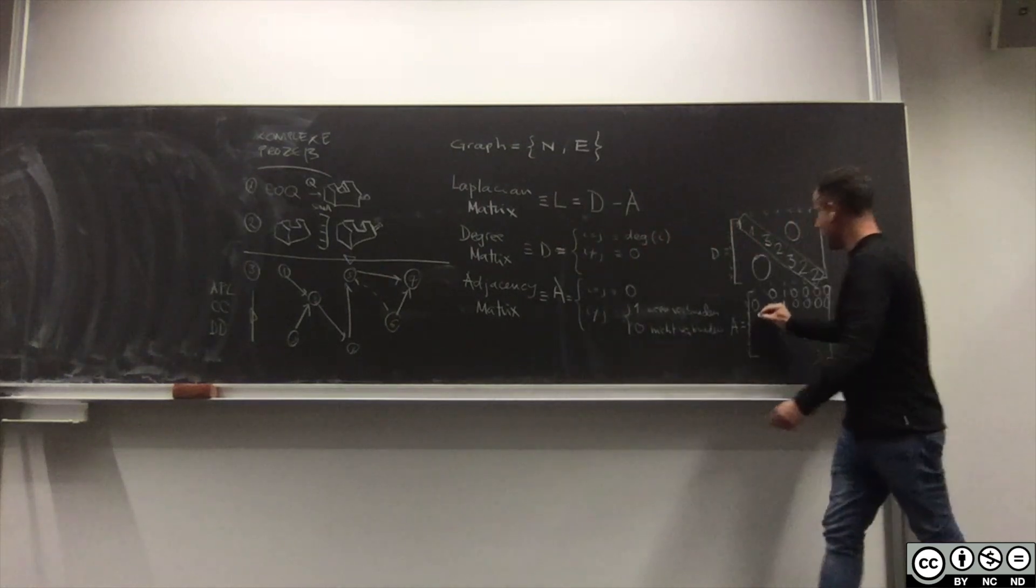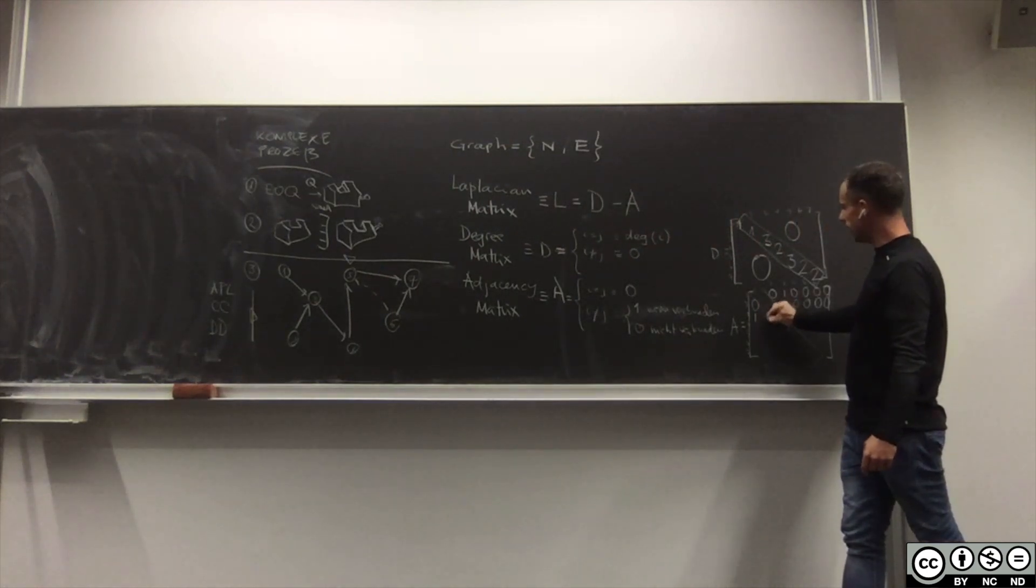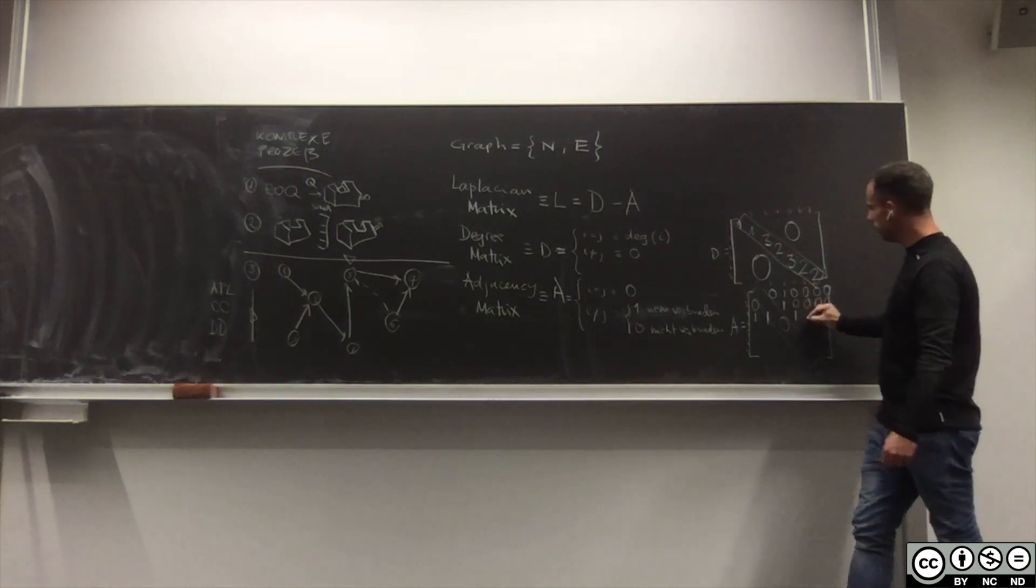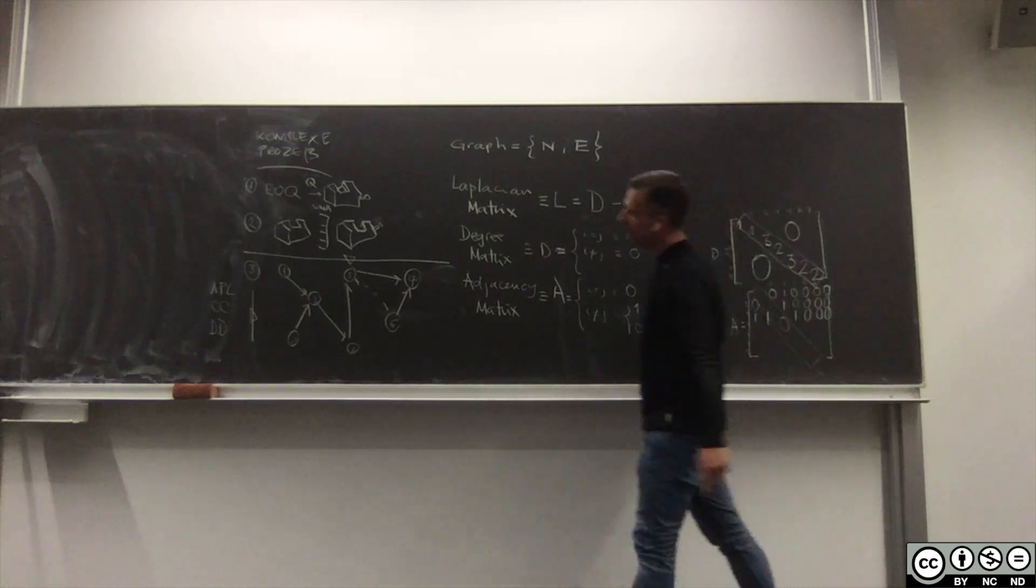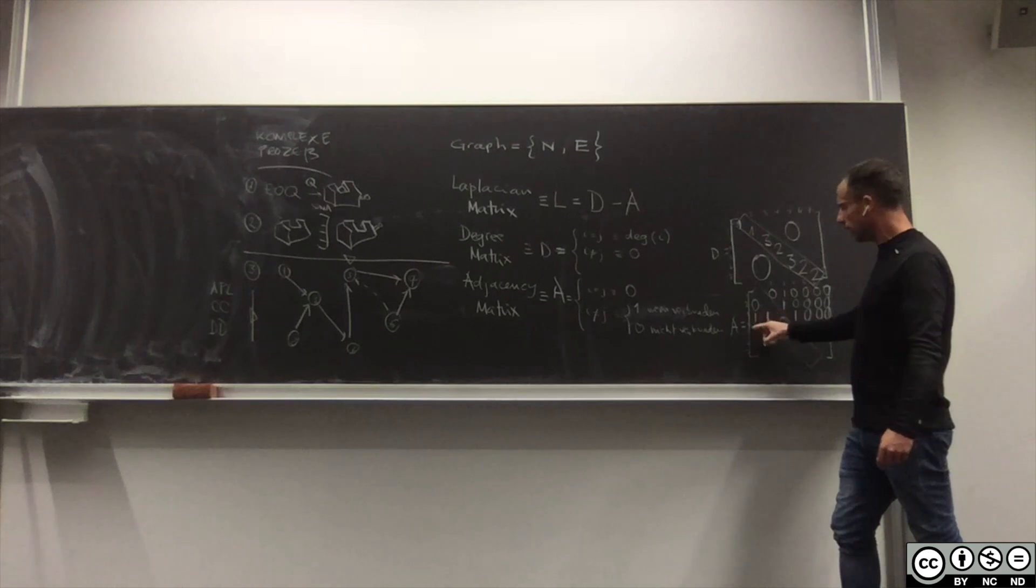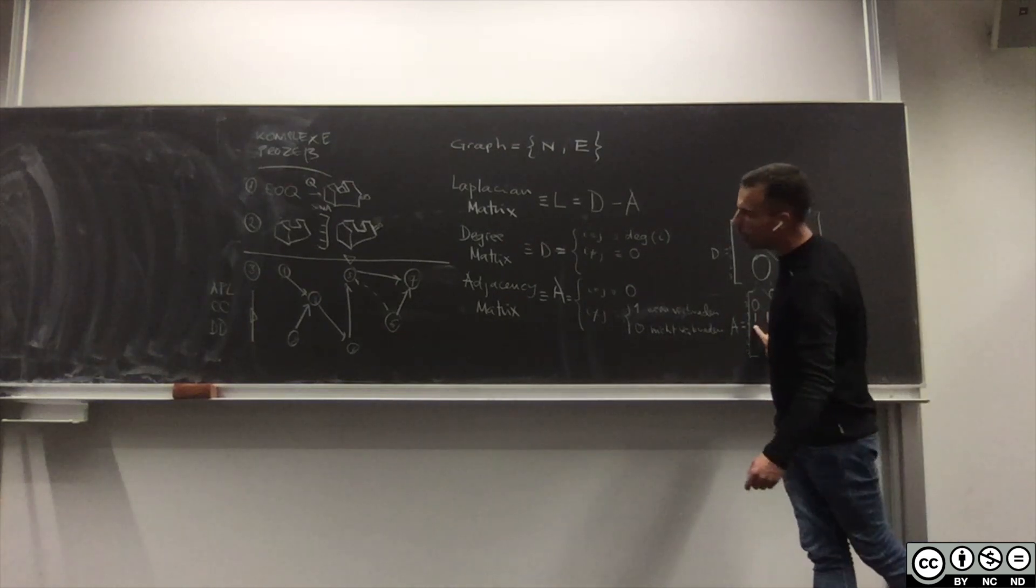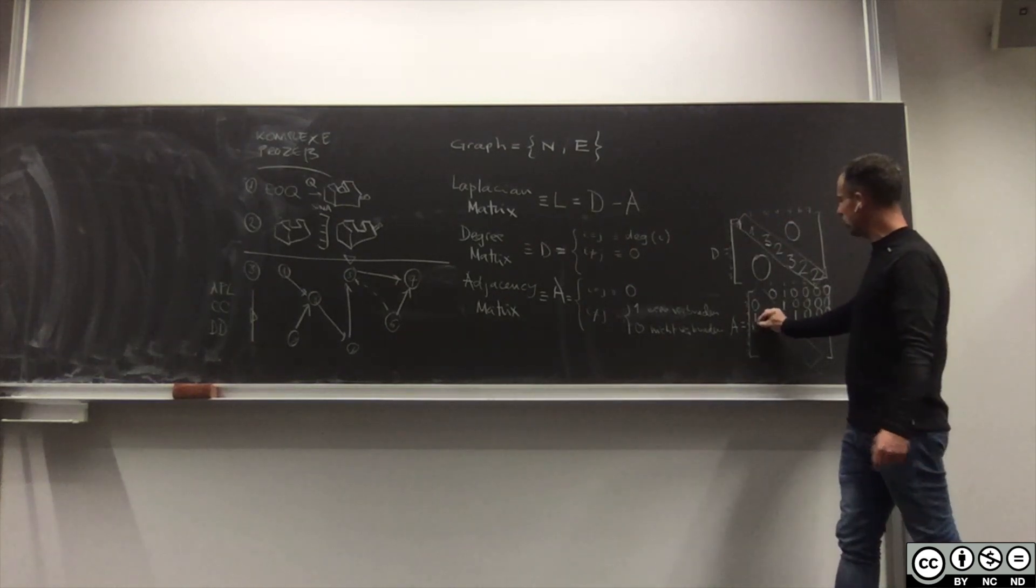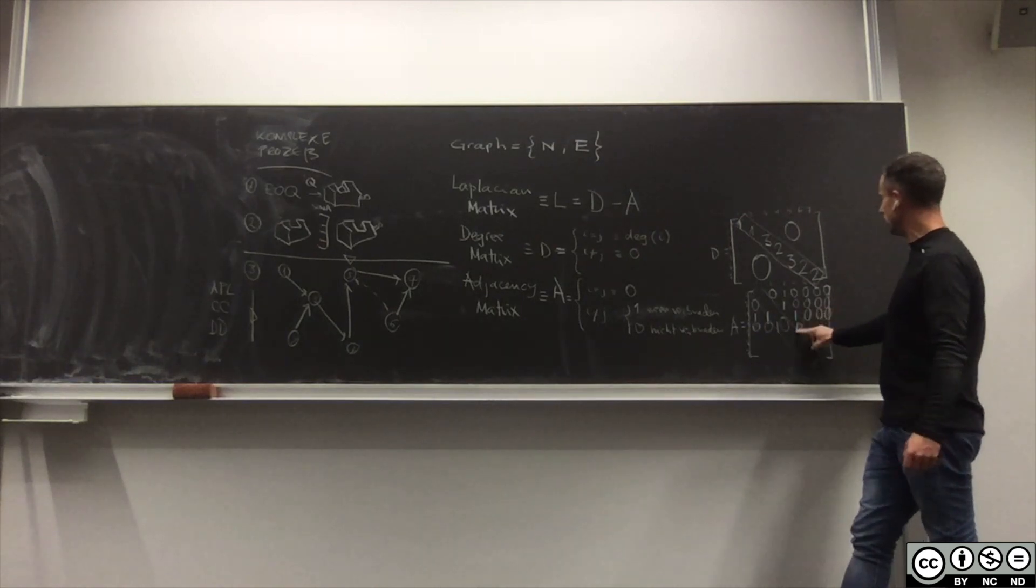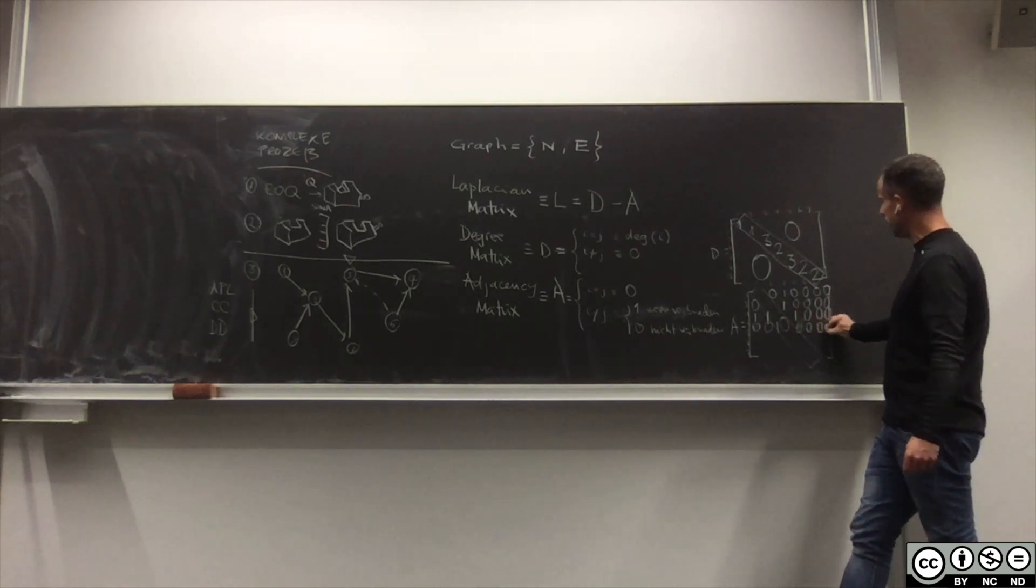Knoten 3 ist verbunden mit 1, ja. Ist verbunden mit 2, ja. Ist verbunden mit 4, auch mit 5 nein 6 nein 7 nein. Knoten 5 ist verbunden - Entschuldigung, Knoten 4 ist verbunden nur mit 3, dann habe ich 0 0 1 0 0 0 0 0 und so weiter.